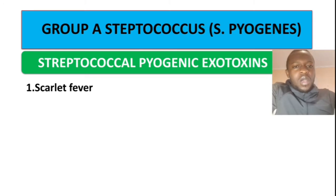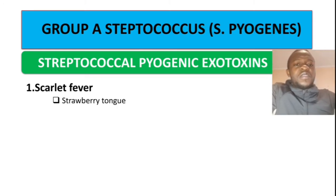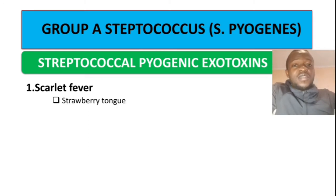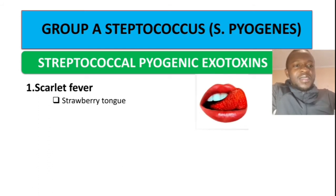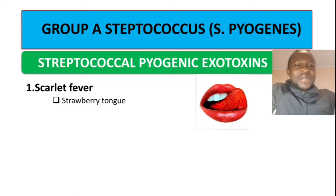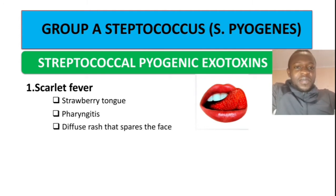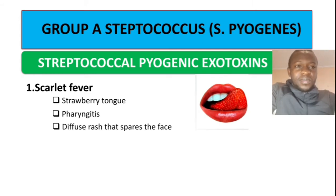The first condition caused by this toxin is scarlet fever. A common symptom of scarlet fever is the strawberry tongue. Other symptoms include pharyngitis and a diffuse rash that spares the face.